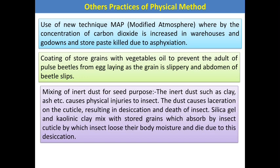Coating stored pulse grains with vegetable oils prevents the adult pulse beetle from egg laying, as the grain becomes slippery and the abdomen of the beetles slips. Simply at the time of storage, pulse grains should be coated with vegetable oils to reduce the egg-laying capacity of the pulse beetle, which is the major pest of pulses. Another technique is mixing inert dusts for seed storage purposes — we can mix different inert dusts like clay and ash, or add silica gel or kaolinite clay. When mixed with stored grains, these are absorbed by the insect cuticle, causing insects to lose body moisture and die due to desiccation.